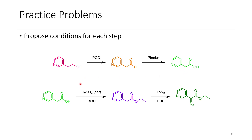Once this acid has been formed it's possible to do a Fischer esterification with ethanol. If this were a more complicated ester than ethanol I'd probably recommend coupling conditions like PyBOP or HATU, but because it's such a simple alcohol I would just do Fischer esterification. Once we have this ethyl ester, it's possible to treat it with tosyl azide in the presence of a base such as DBU to afford the diazo ester product.